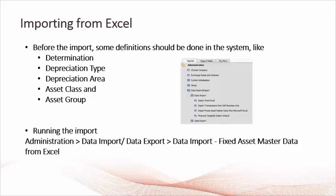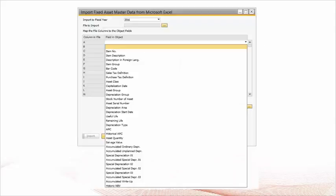In SAP Business One, the import from Excel tool can be found in Administration > Data Import/Export > Data Import > Fixed Asset Master Data from Excel. To run the import, select the fixed asset master data from Excel option, then select the fiscal year for which you want to import the assets. The system will copy the asset values as at the beginning of the fiscal year. You then need to map the Excel sheet columns with SAP Business One fields, specify the data mapping method using the column and field columns, save the mapping method as a template, and select OK.